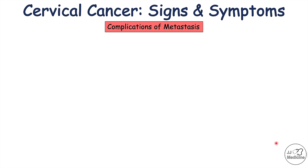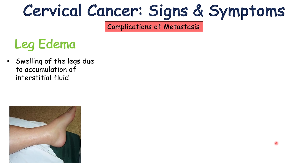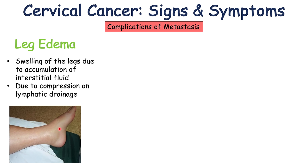There are additional complications related to metastasis of cervical cancer. Beyond local extension into surrounding areas, the cancer can spread further and cause specific findings. One of these is leg edema — swelling of the legs due to accumulation of interstitial fluid. Normally, lymphatics drain that fluid, but a growing cancer in the pelvis can compress lymphatic drainage, impeding the flow of lymph and causing fluid buildup in the legs.